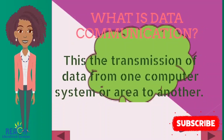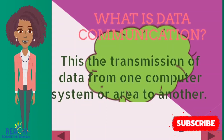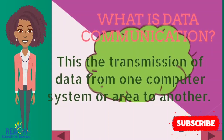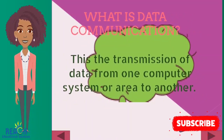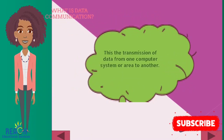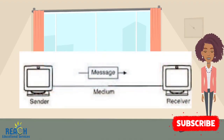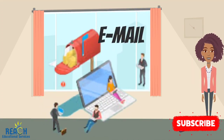So with all that said, let's get into the meat of the matter. What is data communication? Data communication is the electronic transmission of data or information from one area to another. In data communication, you must have a sender, a receiver, and the message that needs to be relayed. An example of data communication is you sending an email from where you are to your friend in another country.